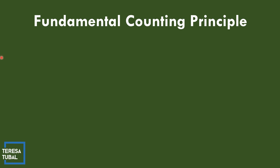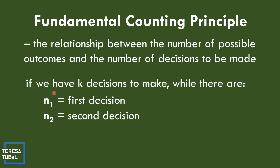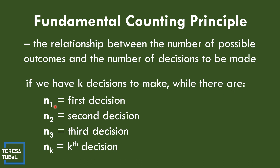Fundamental Counting Principle: the relationship between the number of possible outcomes and the number of decisions to be made. If we have k decisions to make — first decision n-sub-1, second decision n-sub-2, third decision n-sub-3, up to the k-th decision n-sub-k — then the total number of outcomes is n-sub-1 times n-sub-2 times n-sub-3 times n-sub-k.